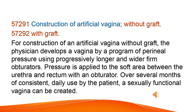Construction of Artificial Vagina, Without Graft: The physician develops a vagina by a program of perineal pressure using progressively longer and wider firm obturators. Pressure is applied to the soft area between the urethra and rectum with an obturator. Over several months of consistent daily use by the patient, a sexually functional vagina can be created.